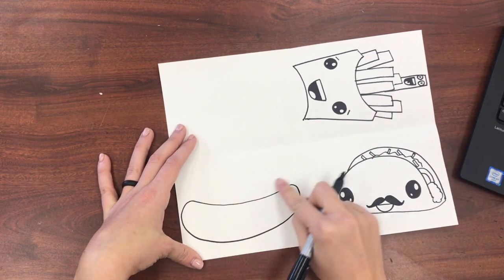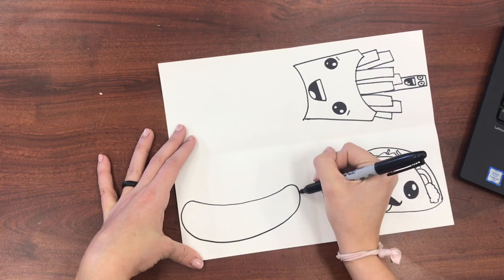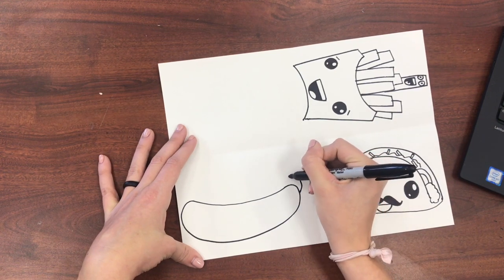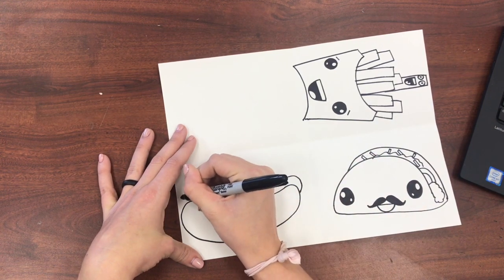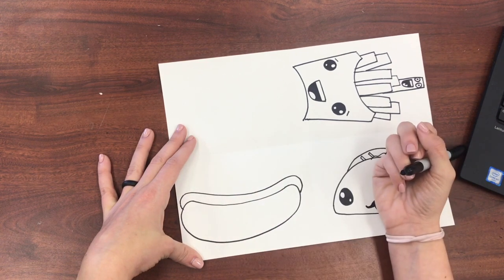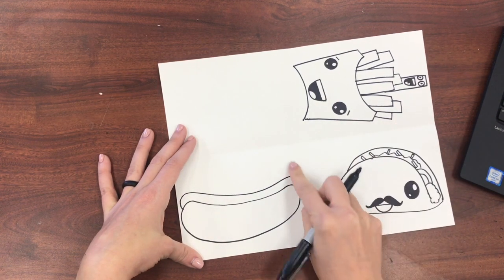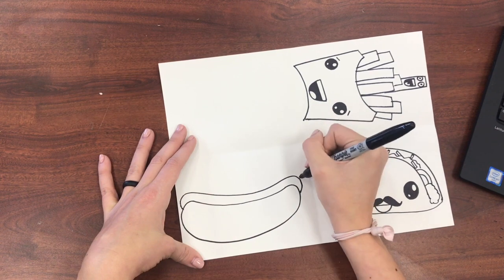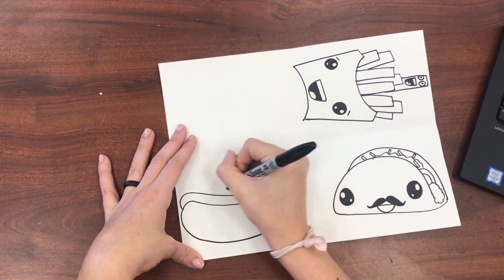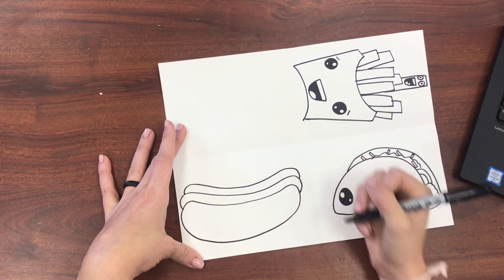Now I'm going to come behind my hot dog bun and I'm going to draw the hot dog parallel to the line I just made. Parallel means it goes side by side. Now I'm going to draw a third parallel line for my other side of my hot dog bun.